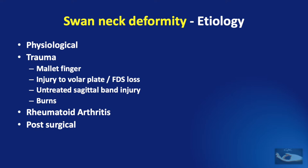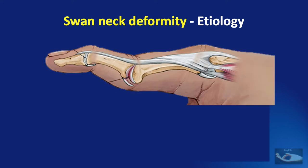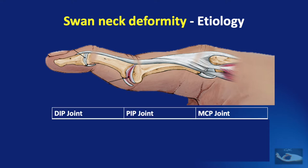Swan neck deformity can very commonly occur in rheumatoid arthritis. It can also occur after certain surgical procedures like harvest of the flexor digitorum superficialis tendon or in claw correction procedures where the tensioning has been too tight for achieving metacarpophalangeal joint flexion. In certain conditions like cerebral palsy and Volkmann's ischemic contracture, swan neck deformity can be noted.